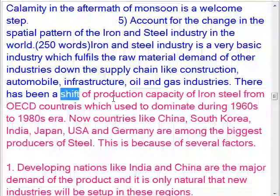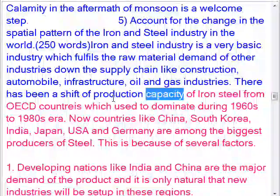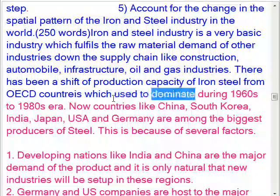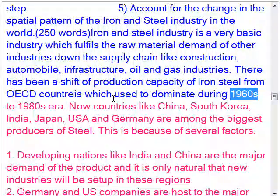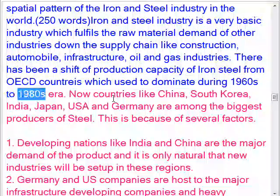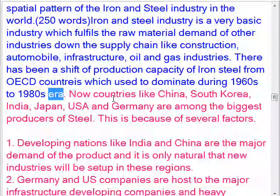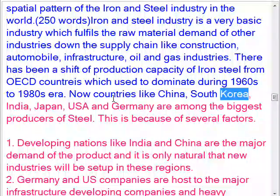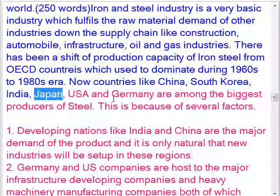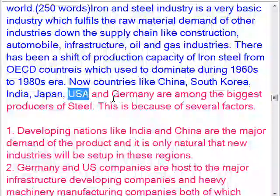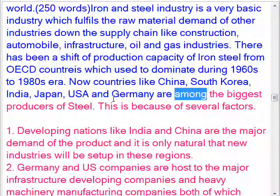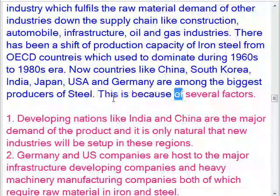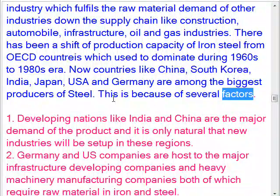There has been a shift of production capacity of iron and steel from OECD countries which used to dominate during the 1960s to 1980s era. Now countries like China, South Korea, India, Japan, USA, and Germany are among the biggest producers of steel. This is because of several factors.